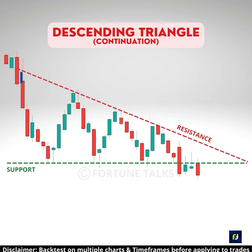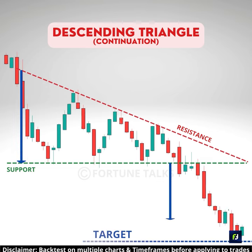To set the target, measure the distance from the highest point of the descending triangle to the flat support line, and project it downwards from the breakout point.